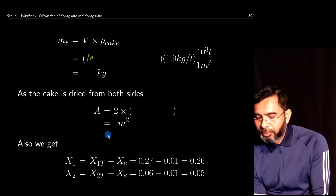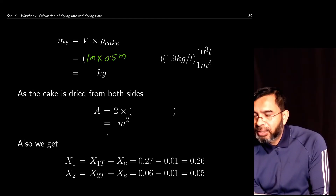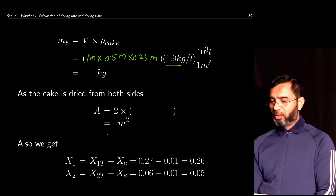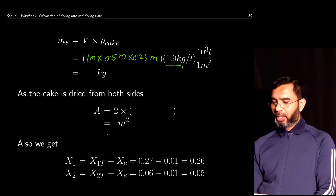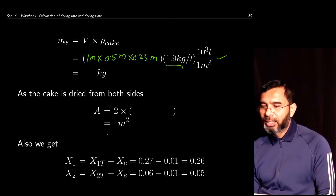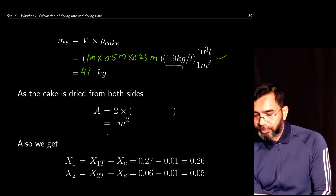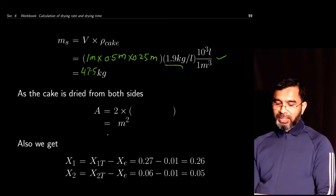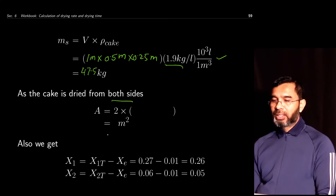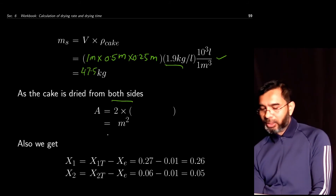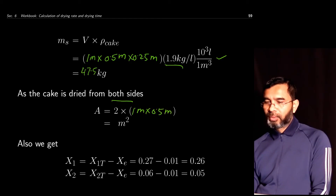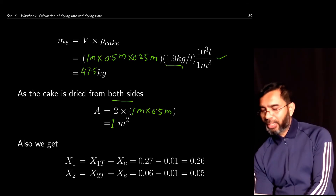To calculate drying time, we also need the solid mass and drying area. The solid volume is 1 m × 0.5 m × 0.25 m (thickness converted from 5 cm). Using the dry density of 1.9 kg/liter and performing the unit conversion gives a solid mass of 47.5 kg. Since the cake is dried from both sides, the drying area is 2 × 1 m × 0.5 m = 1 m².